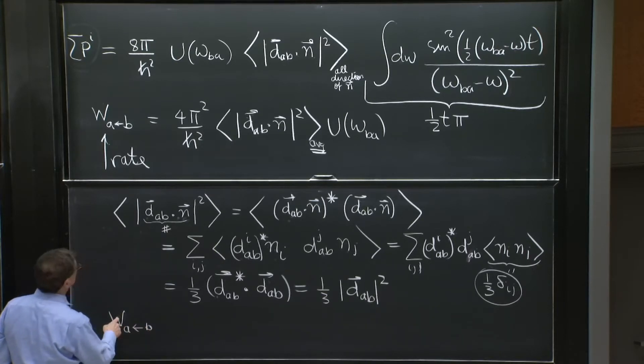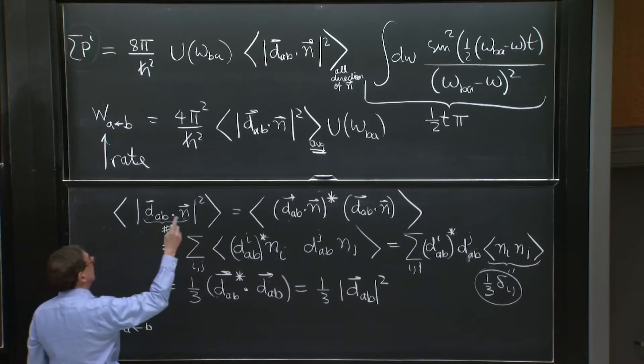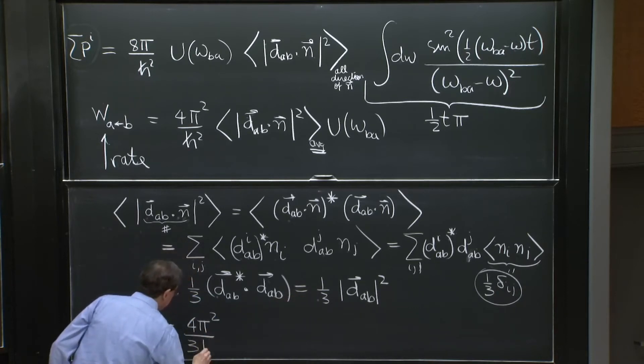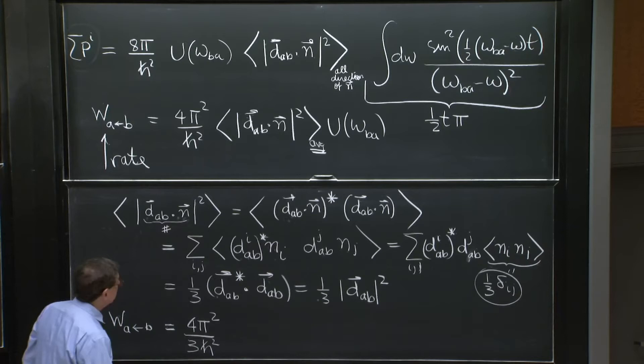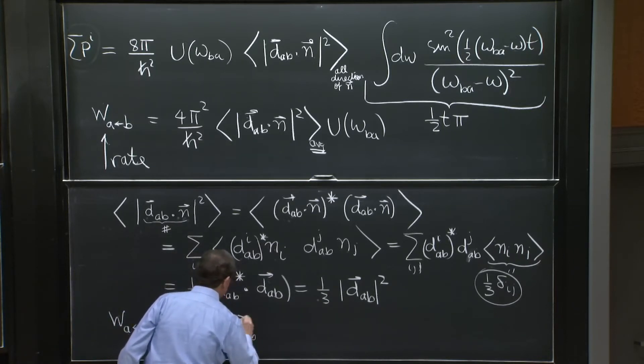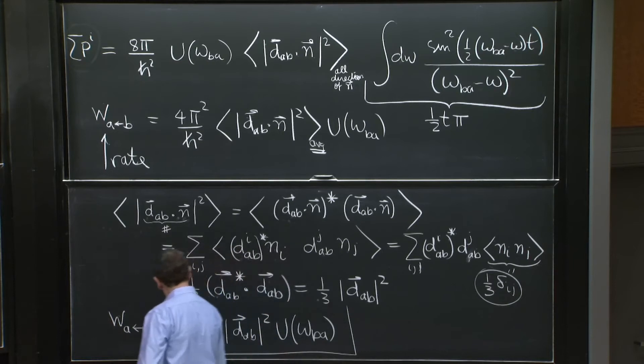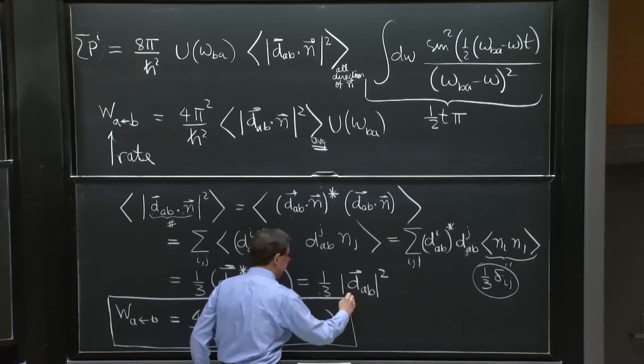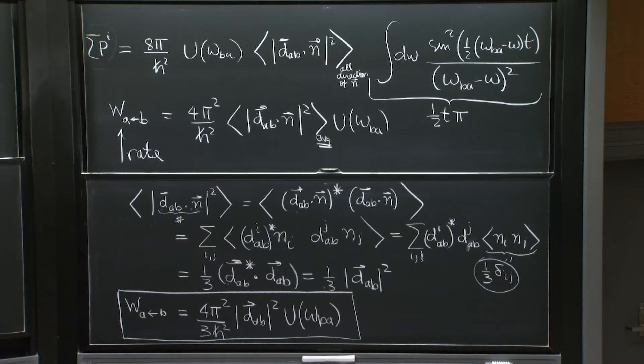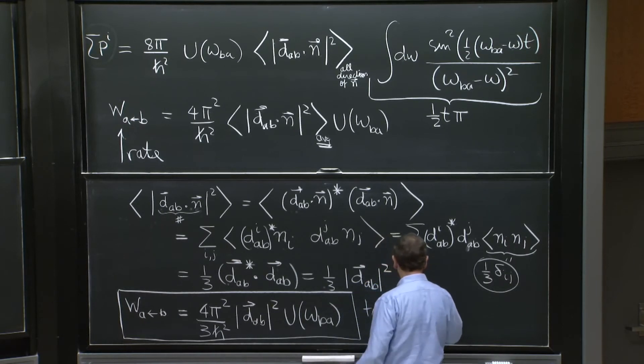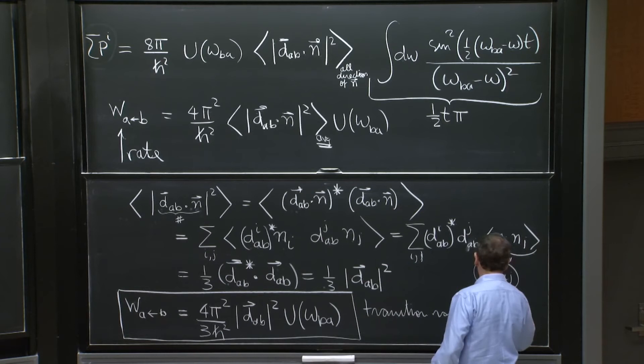The rate for spontaneous transition triggered by electromagnetic fields, an incoherent superposition of electromagnetic fields is 4π squared. We get the 1 third here over 3h squared d_AB vector squared u omega BA. And it's a transition rate per atom. We've considered a single atom. So it's a transition rate per atom.